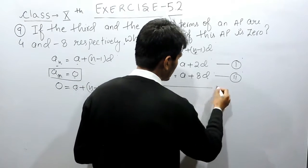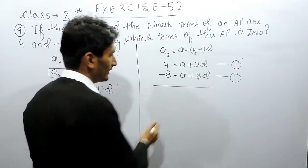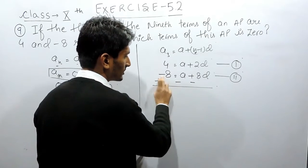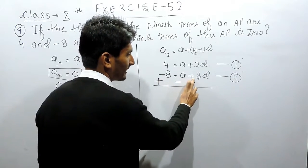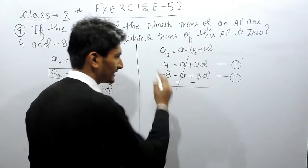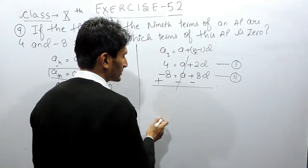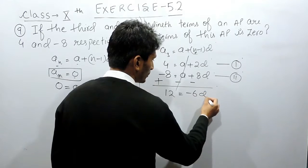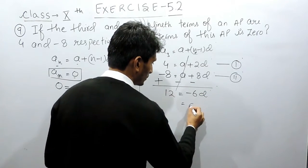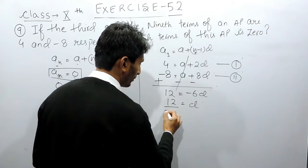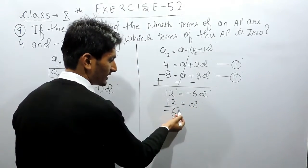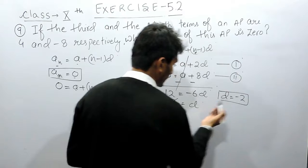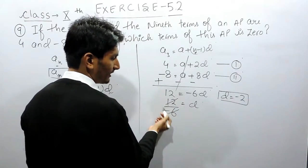We can solve these two equations by subtracting them. When we subtract, the signs change: negatives become positive and positives become negative, so the a terms cancel out. We get 6d equals 12 plus minus 8, which simplifies to 6d equals minus 12. So the common difference d equals minus 12 divided by 6, which gives d equals minus 2.